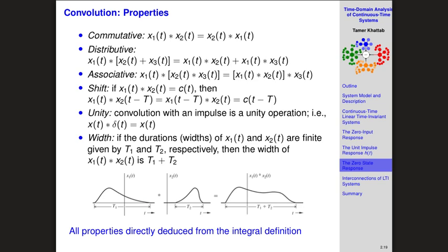The second property is that convolution is distributive. If you take the convolution of X₁(t) with the sum of X₂ and X₃, that's the same as convolving X₁ with X₂, then convolving X₁ with X₃, and adding the results together. This is called the distributive property.